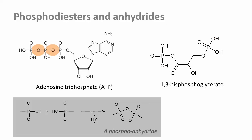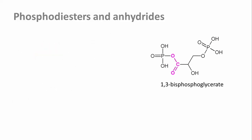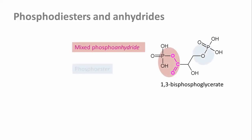Check carefully, though: there is only one phosphoanhydride link. The other is a phosphoester. To find out which is which, we need to find the carboxyl group — this is the one that is linked to phosphate as an anhydride. The other group is an ester of phosphoric acid with a hydroxyl group.